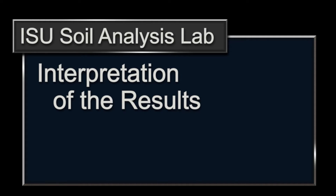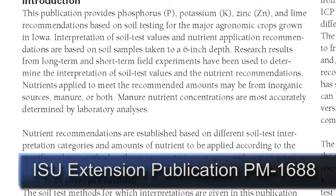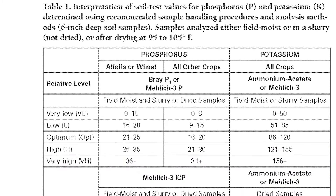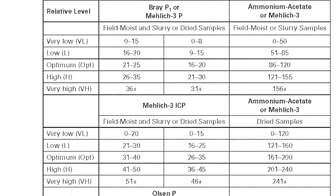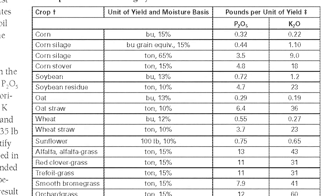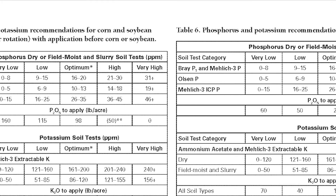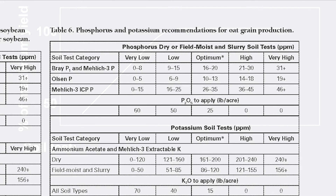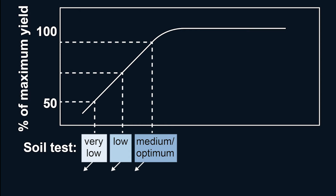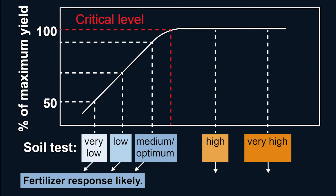All Iowa State interpretive data can be found in PM1688, and many other states have similar publications. The values obtained in the laboratory for plant-available nutrients should be thought of as indices, which mean little without proper interpretation. Interpretation is specific to crops, soils, and local weather conditions of a region. Iowa State researchers conduct many field trials in different soils of the state to determine soil test response categories, which indicate the probability of obtaining a fertilizer response. From the field calibration data, fertilizer recommendations are made.